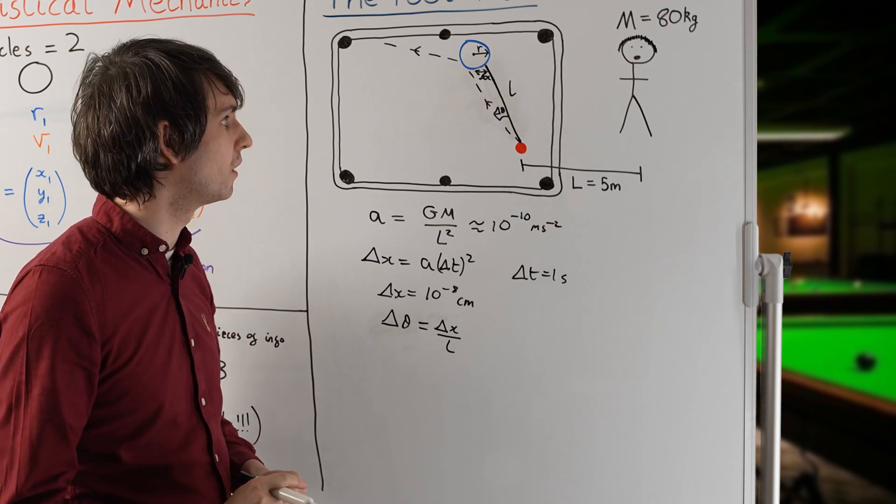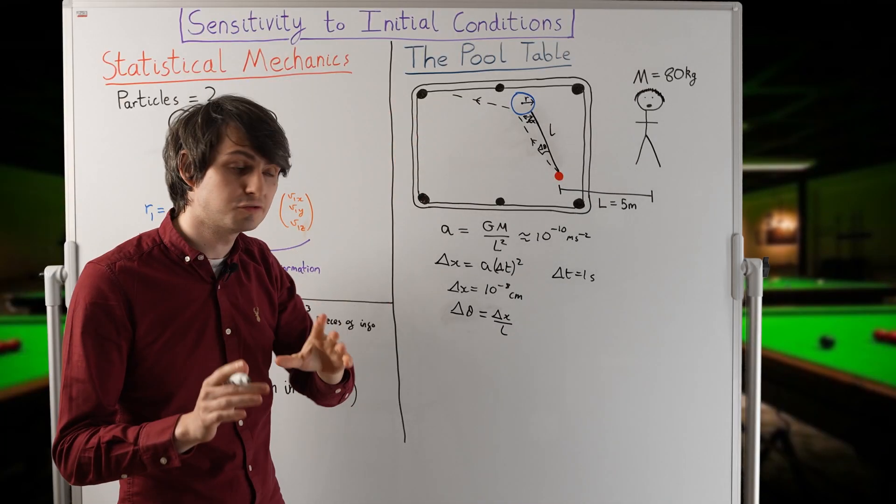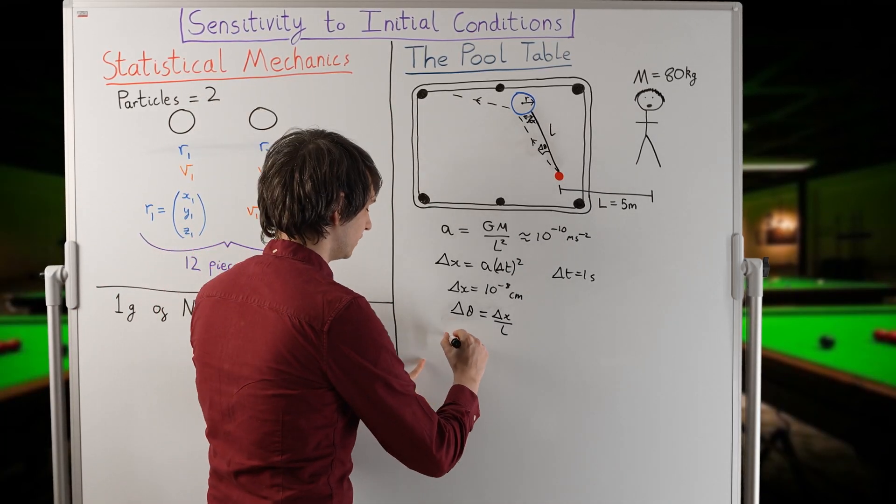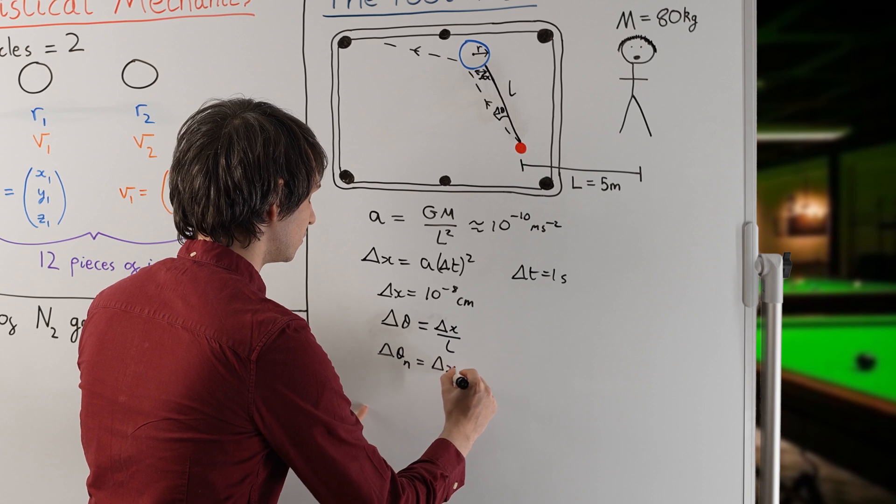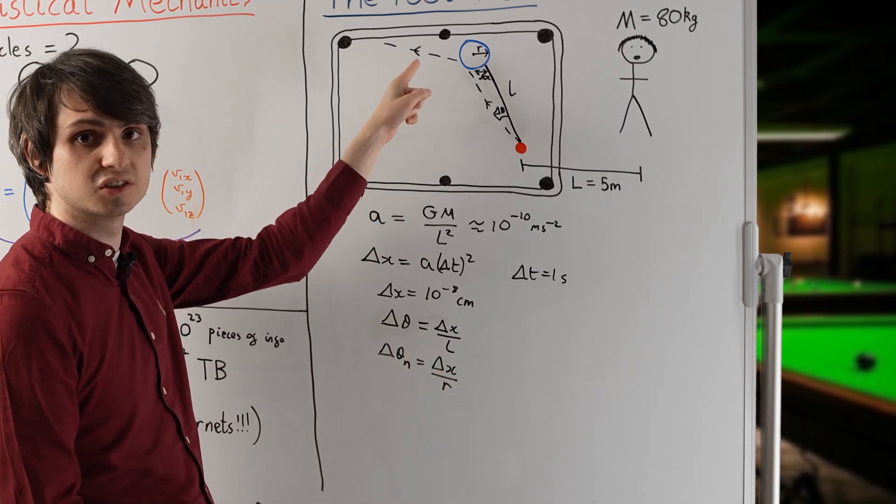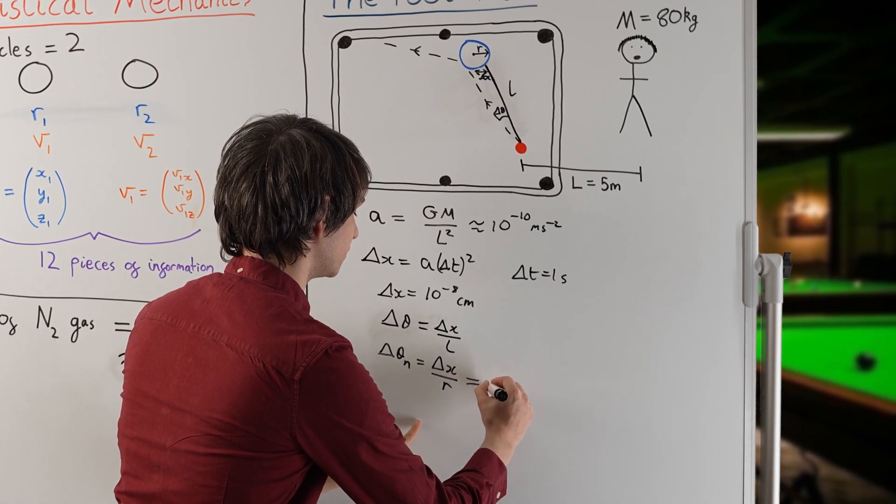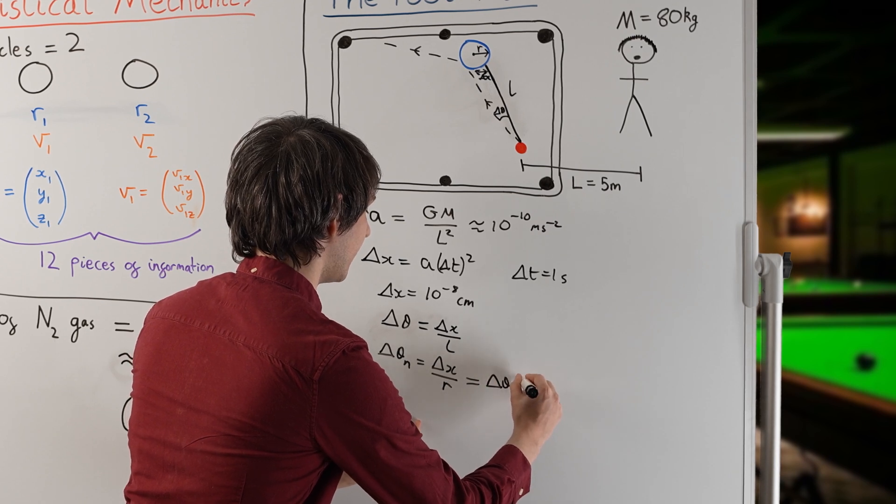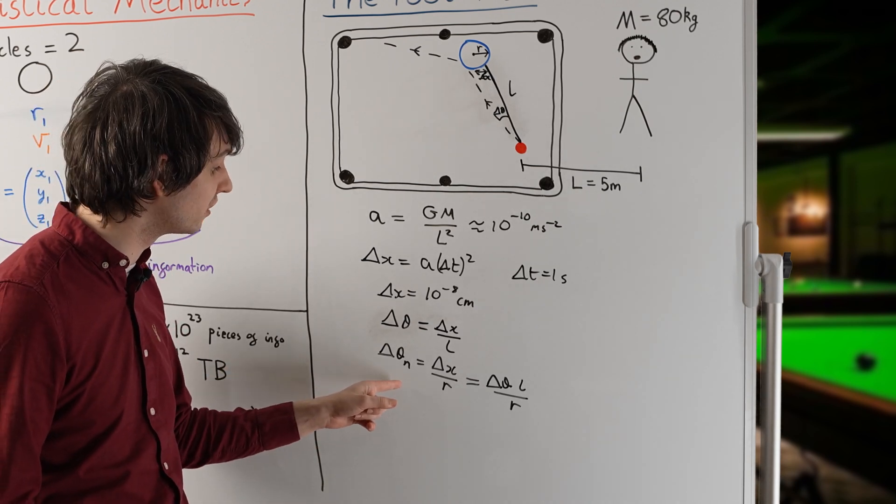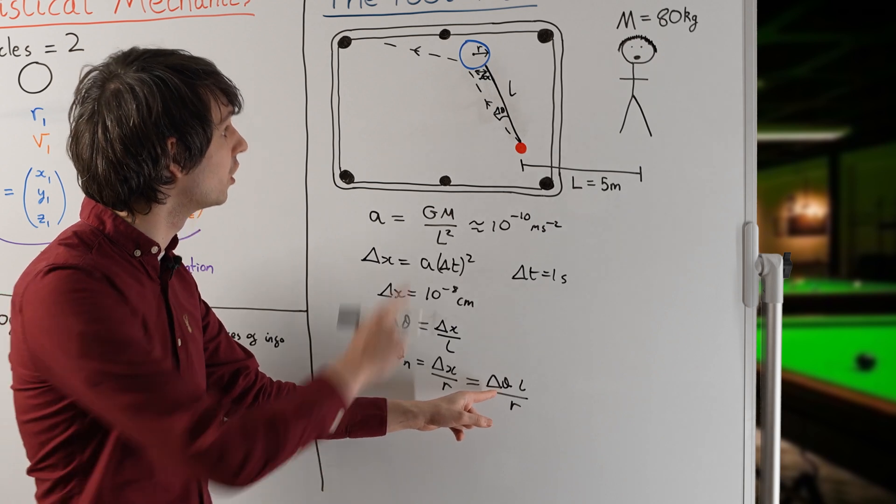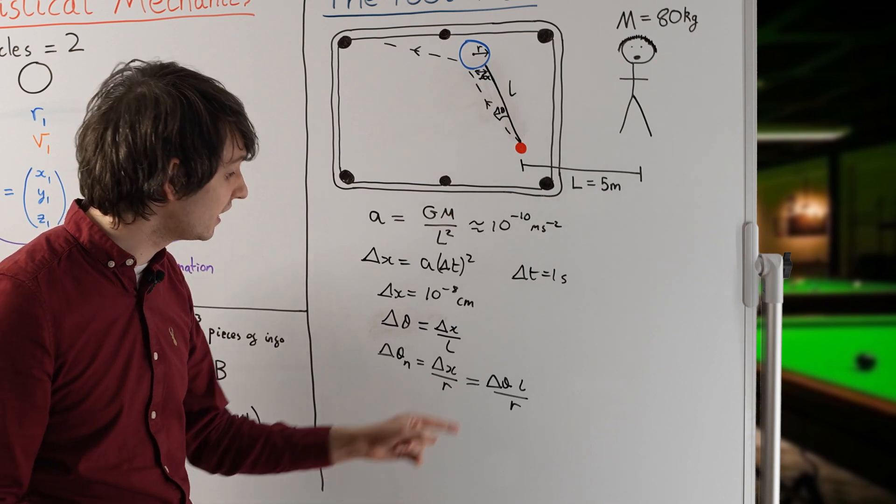But notice now that this is going to affect the angle at which the ball emerges from the collision. After its collision, we find that the new angular deflection, delta theta nu, is going to be given by delta x, the distance deflection, divided by r, where r is the radius of the ball. Interestingly, we can rewrite this in terms of the old angular deflection as delta theta times l divided by r. What we found is that after a collision, the new angular deflection is given in terms of the angular deflection before the collision times a factor l over r. And l over r here is greater than 1.